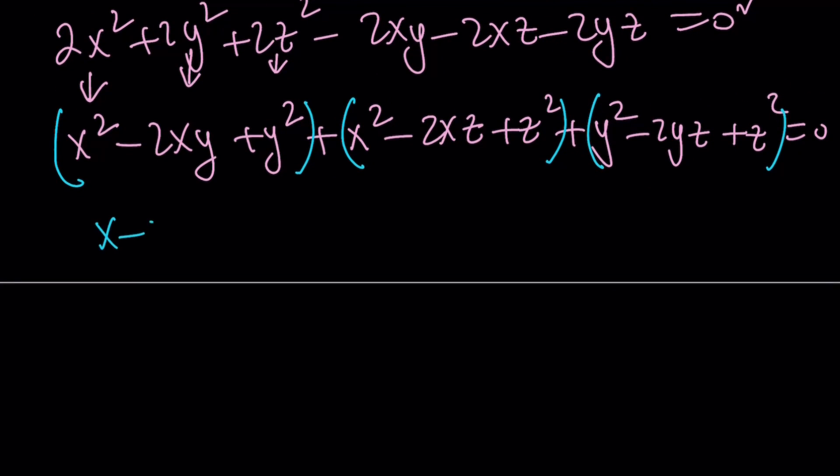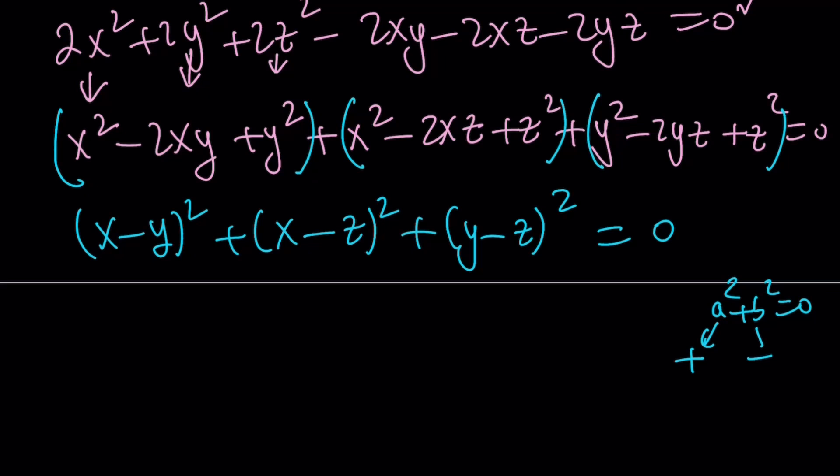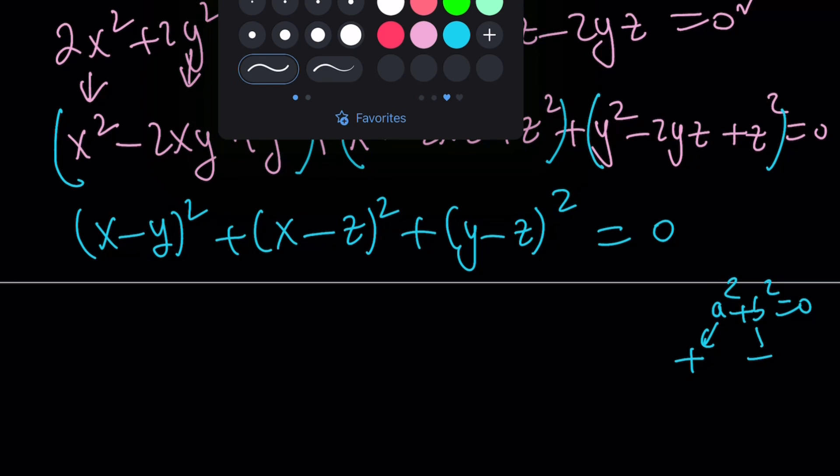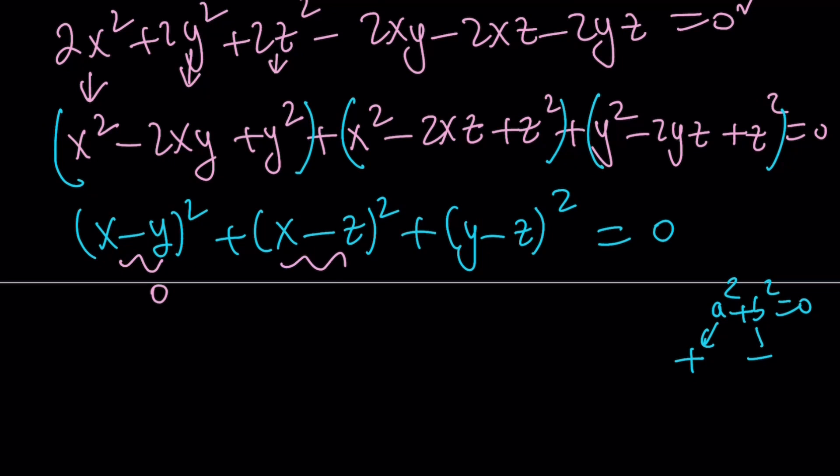So now we can write it as x minus y quantity squared, x minus z quantity squared, and y minus z quantity squared, and that equals 0. And what does that tell you? If x, y, z are real numbers, you can only get a 0 by adding squares if each one is a 0. Because think about it. You can get a squared plus b squared equals 0, and either a and b are both 0, or one of them has to be positive, the other one has to be negative. But b squared cannot be negative in the real world, therefore everything has to be 0. So this has to be 0, this has to be 0, and this has to be 0.